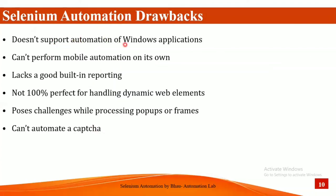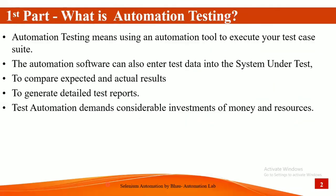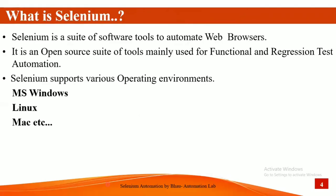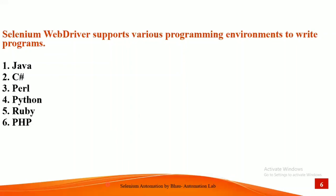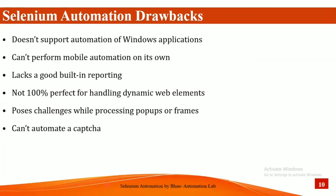So these are all the things about the theoretical part of Selenium — what automation is, why automation is required, what Selenium is, which browsers and languages Selenium supports, the history of Selenium, Selenium automation benefits, and drawbacks. Hope you guys understand these things theoretically. If you need these notes, just comment and I'll provide them. From the next chapter we will start the practical automation. Let's meet in the next chapter — till then, have a great day, bye!